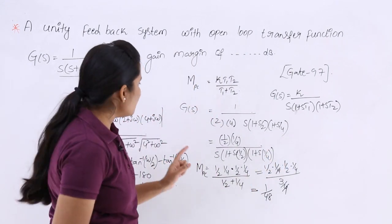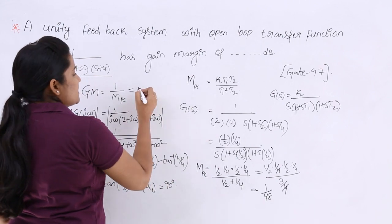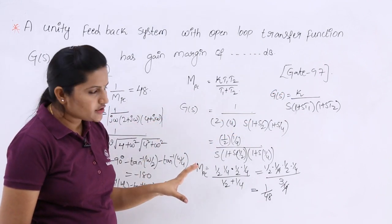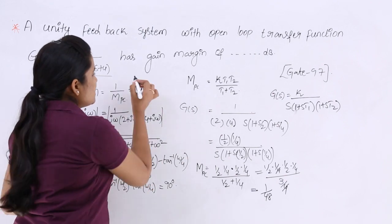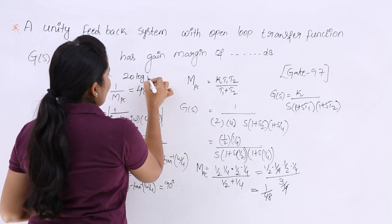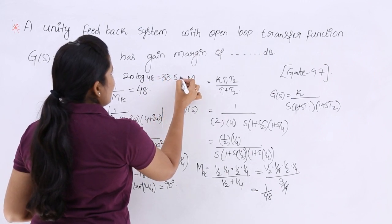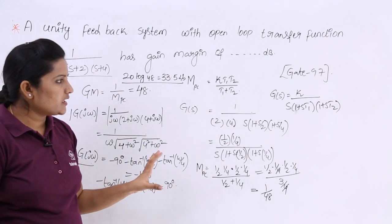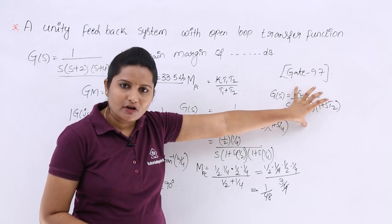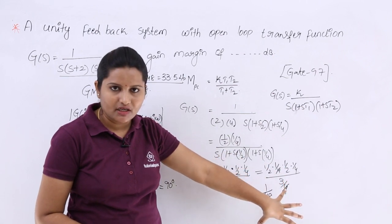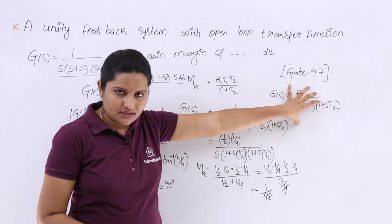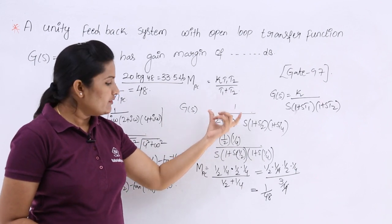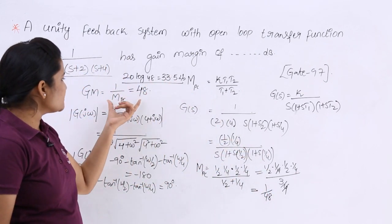The gain margin is 1 divided by the magnitude, which gives 48. Since the question asks for gain margin in dB, we calculate 20·log(48), which equals approximately 33.5 dB. So the shortcut method is: convert the transfer function to standard form, read off K, T1, T2, compute K·T1·T2/(T1+T2) as the magnitude, then take the reciprocal for gain margin.